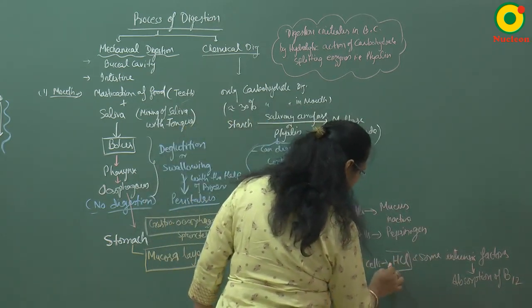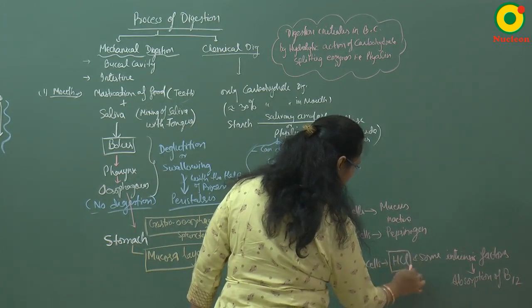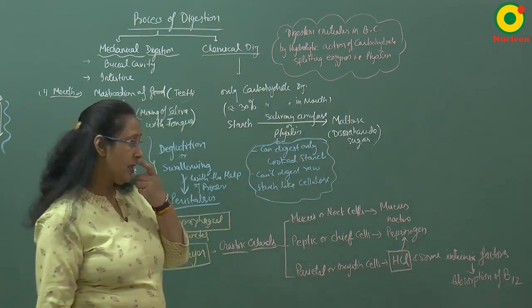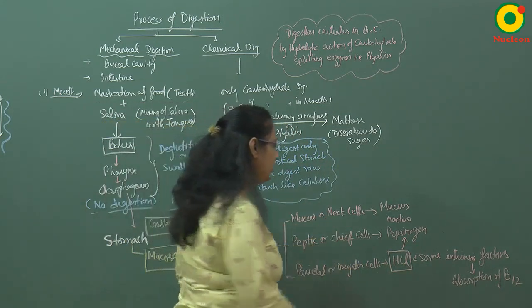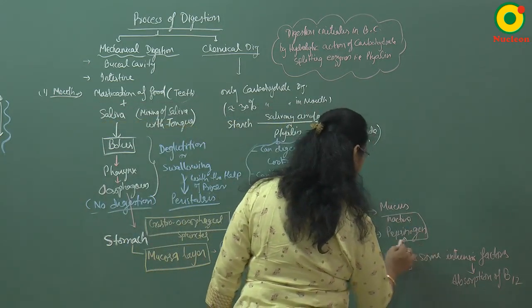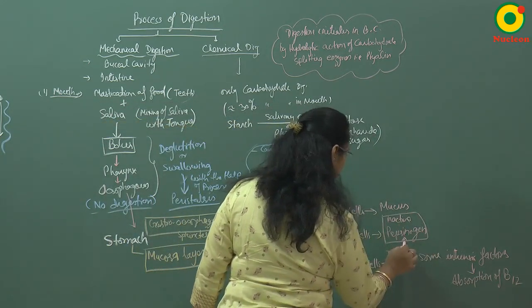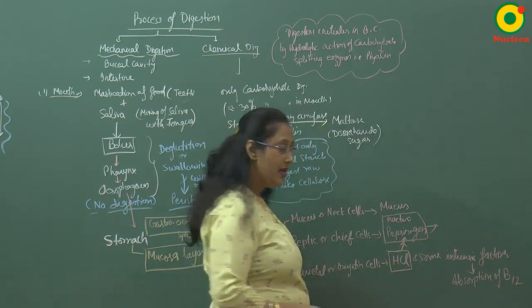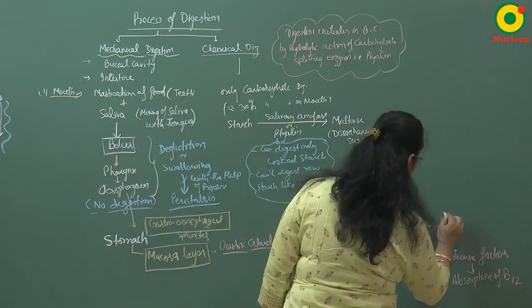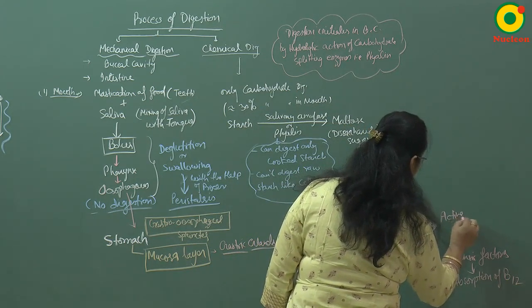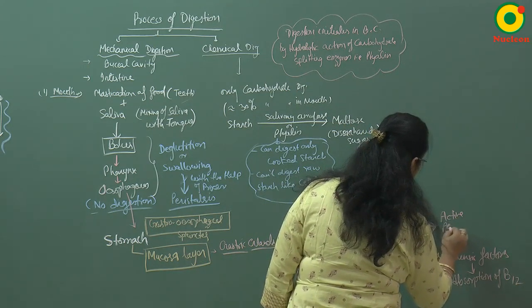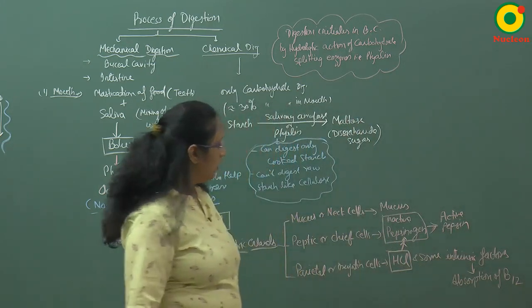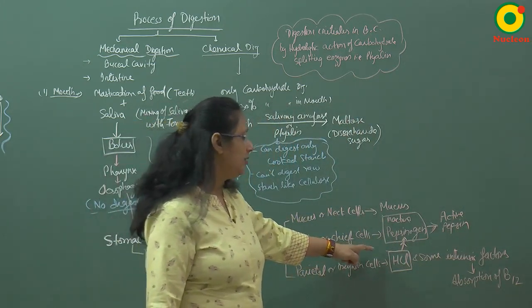HCl will convert the inactive pepsinogen into active pepsin.